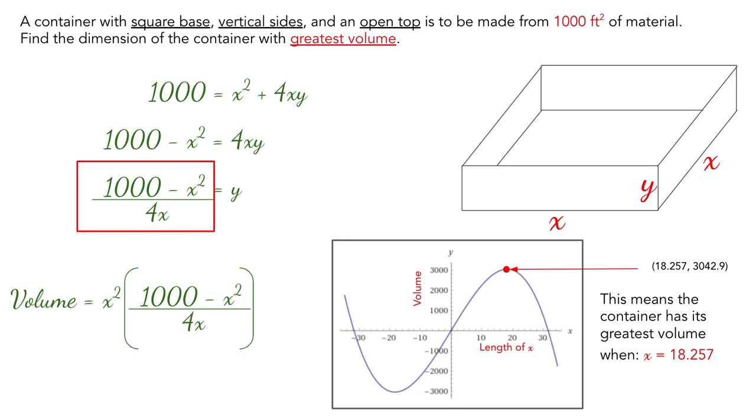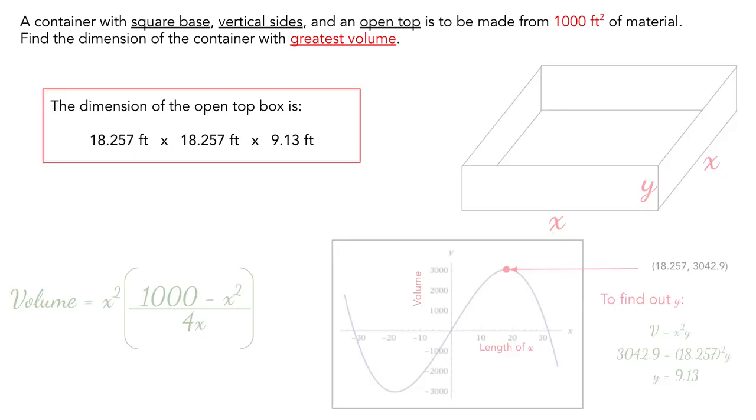And with this, we ask, then what about y? Because we need to find the dimension, right? So to find y, we can make use of the volume equation that we had earlier, which is x squared times y, and we can substitute the volume with the volume right here, the given volume right here, 3042.9, and then we substitute the x with 18.257, square that, you solve for y, and the y would be 9.13 feet. So what you have here is that the dimension of the container of this open top box that will give you the greatest volume, given that you only have 1,000 square feet of the material to build this box is 18.257 feet by 18.257 feet by 9.13 feet.